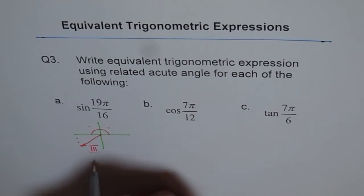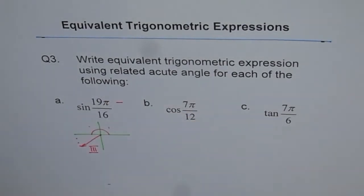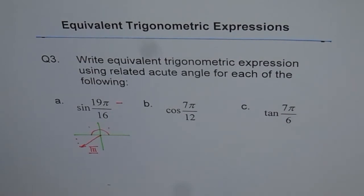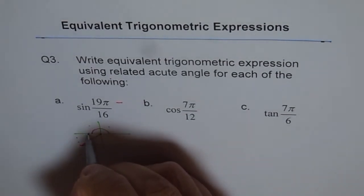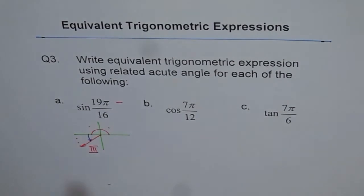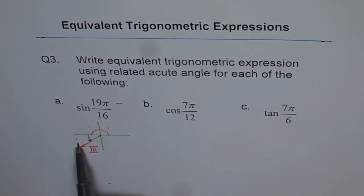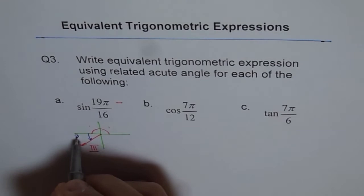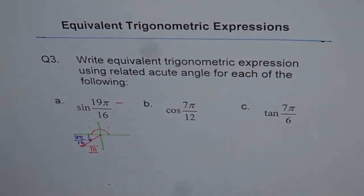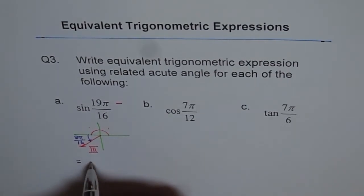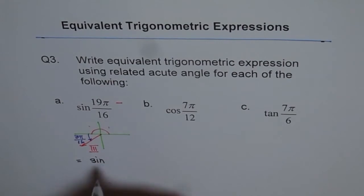So you are in quadrant 3. Now in quadrant 3, sine should be negative. So you are expecting a negative value. Second part which we have to check is what is the related acute angle. So acute angle is after 16, 17, 18, 19. So it is 3π by 16. Do you understand? So that is my related acute angle.